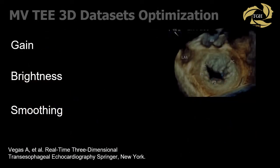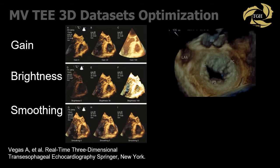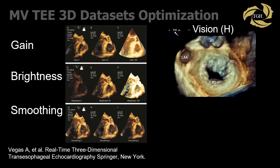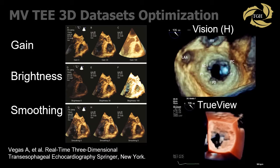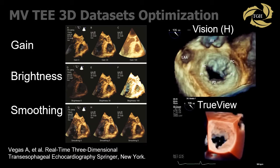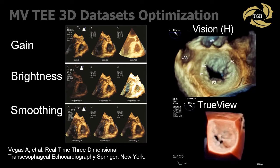Optimizing the display of the 3D datasets involves commonly adjusting parameters. Good 3D images begin with good 2D images, so optimize the 2D image first. Gain — overgain in particular is represented by an increase in brown speckles, and undergain by a loss of tissue. Overall brightness or smoothing affects how coarse the image appears. Fission, or the shades of color, are used to display 3D anatomy. More recently, one vendor can display the mitral valve with even more realistic tissue.